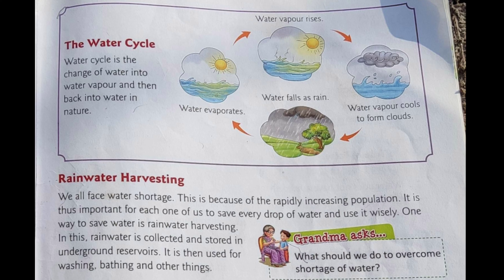In rainwater harvesting, we collect rainwater and channel it through pipes underground into a reservoir. The reservoir stores the water at the bottom, and we can then remove it and use it for bathing, washing, and other purposes.